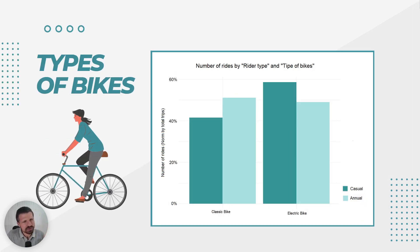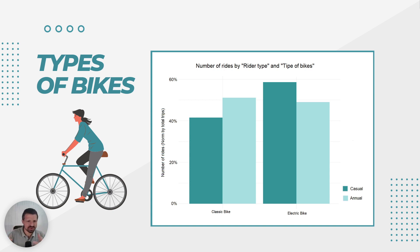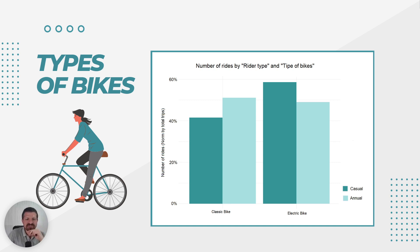As we take a closer look at bike type preference for each member group, we can see that annual riders have a more neutral approach towards bike types, meaning they don't seem to have a specific preference. On the other hand, we observe that casual members have a 20% greater preference for electric bicycles, which reinforces our theory that they use bikes for more recreational purposes.